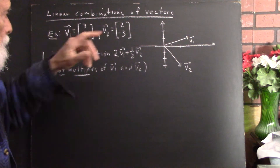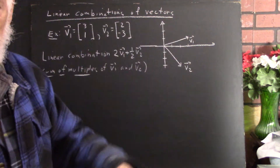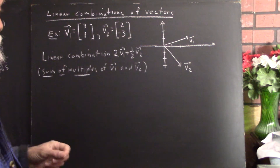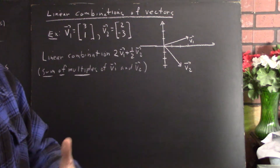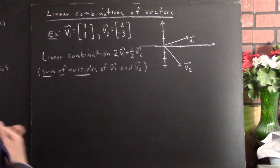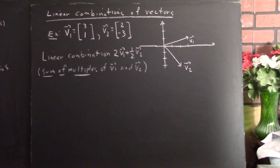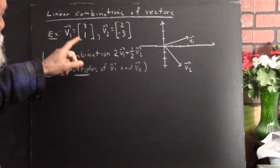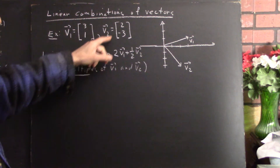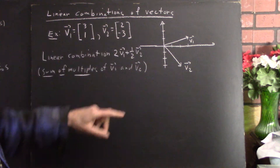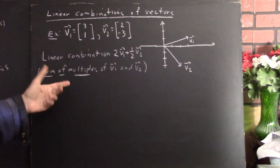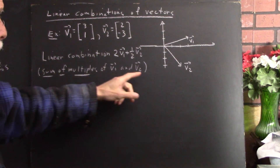We want to talk about linear combinations of vectors — a very central idea. A linear combination of vectors is a very simple concept. A linear combination of two or more vectors is just a sum of multiples of those vectors. For example, the linear combination of vector v1 equals (3,1) and v2 equals (2,-3) is a sum of multiples of v1 and v2.